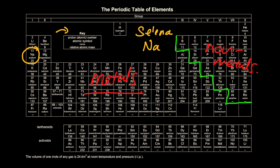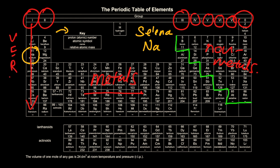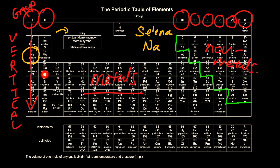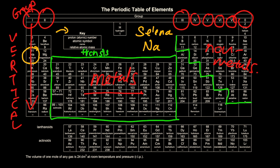Another thing I want you to take note: can you see on top of the periodic table there are Roman numerals? What do all these Roman numerals represent? They actually represent your groups. The vertical rows are your groups. So, how many groups are there? We have group 1, group 2, and then go straight to group 3, 4, 5, 6, 7, and group 0. Now, you will say — hey, but what about the ones in the middle? Well, they have a special name. They are called your transition metals.